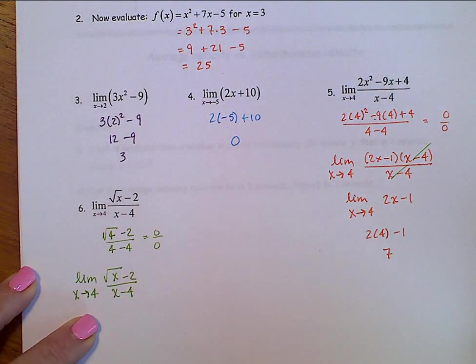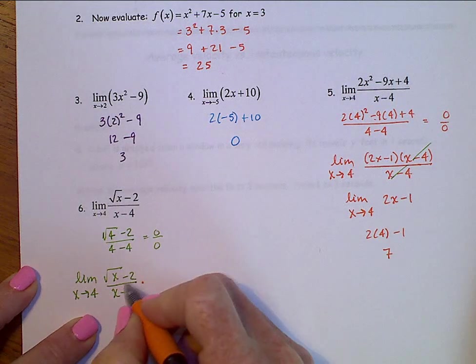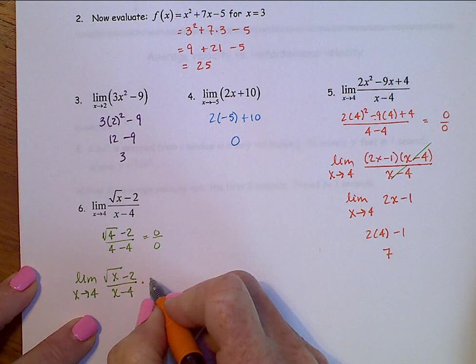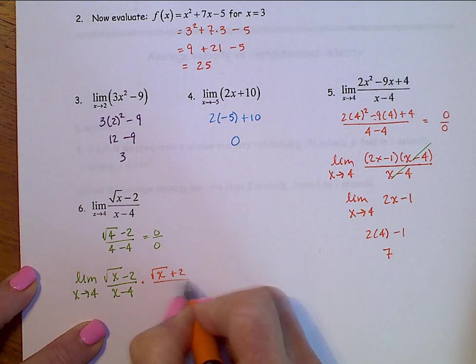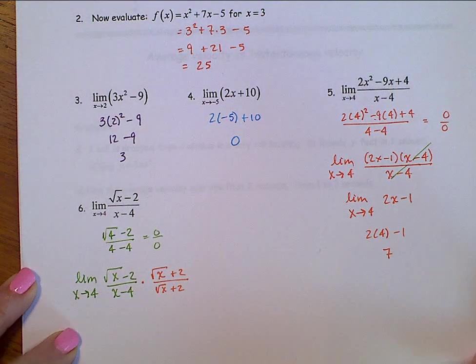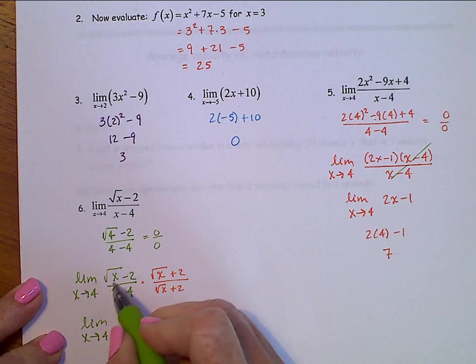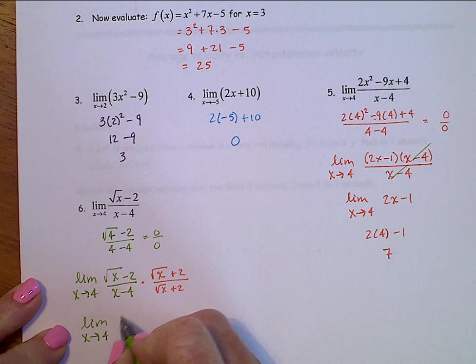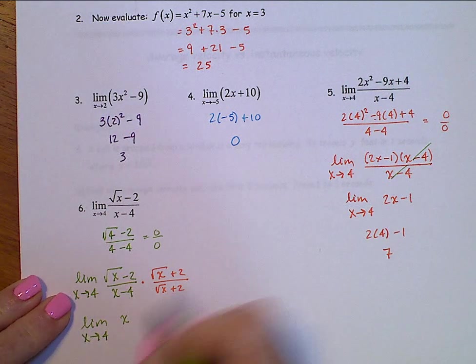So, when we rationalize a numerator, we're going to do the same process, just to the numerator, and we're going to multiply by the conjugate of the numerator. So, square root of x plus 2 over square root of x plus 2. And when we do that, up in the numerator, square root of x times square root of x is x, middle terms are going to subtract out, minus 4.